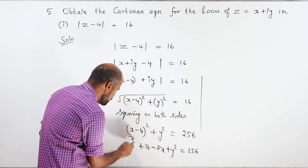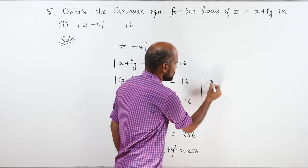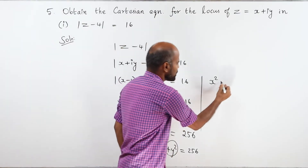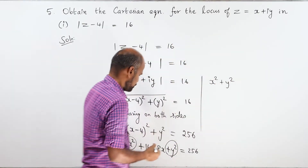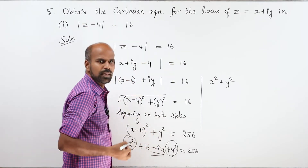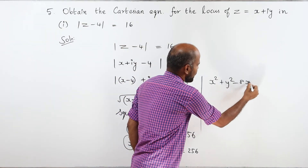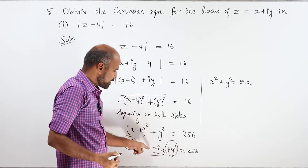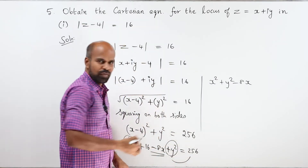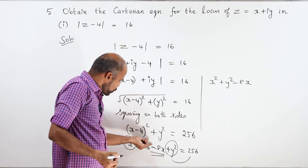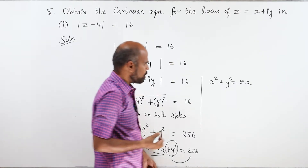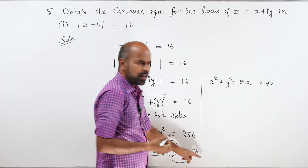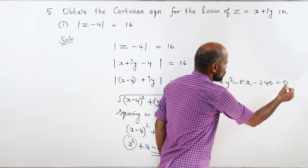So x squared plus y squared minus 8x plus 16 equals 256. Moving 256 to the other side: x squared plus y squared minus 8x plus 16 minus 256 equals 0, which simplifies to x squared plus y squared minus 8x minus 240 equals 0.